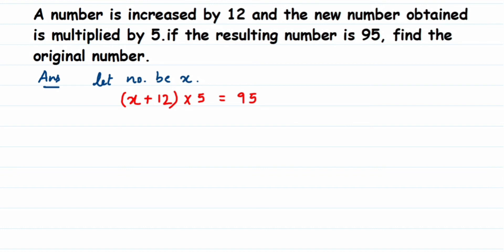To open the brackets, multiply 5 with x to get 5x, then multiply 5 with 12 to get 60. So we have 5x plus 60 equals 95.